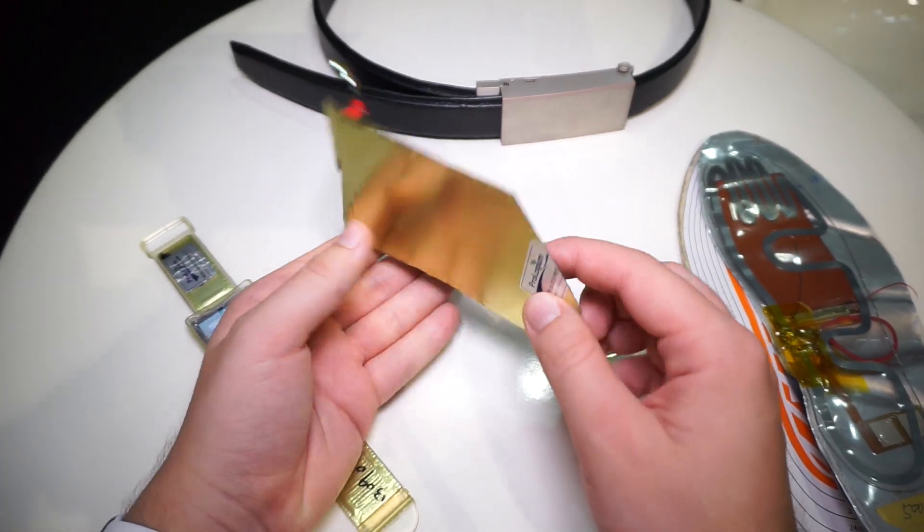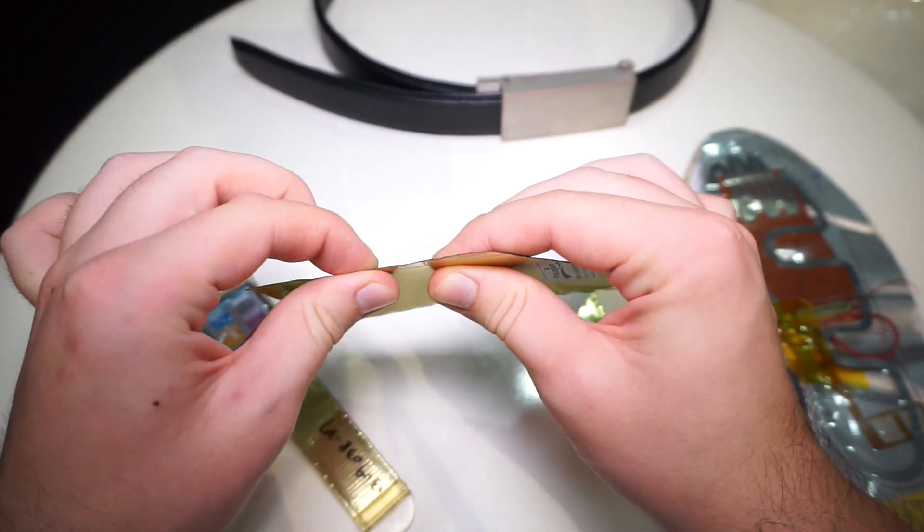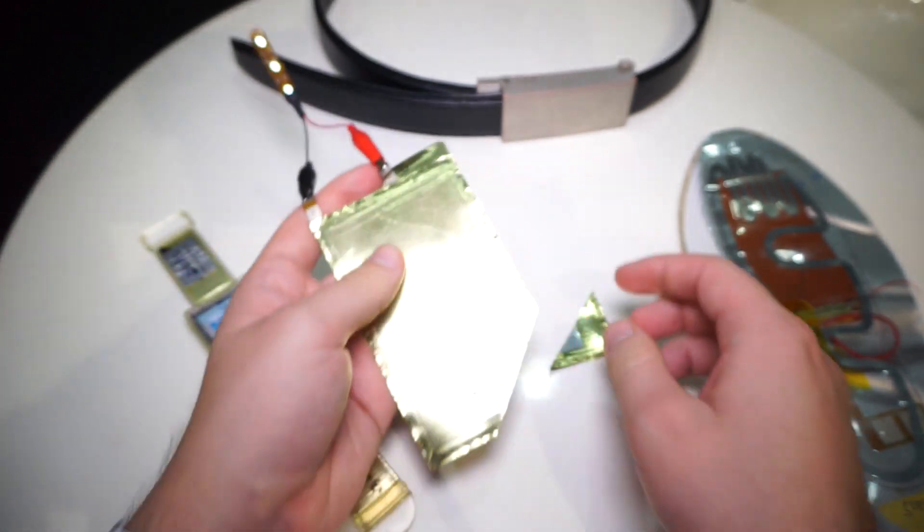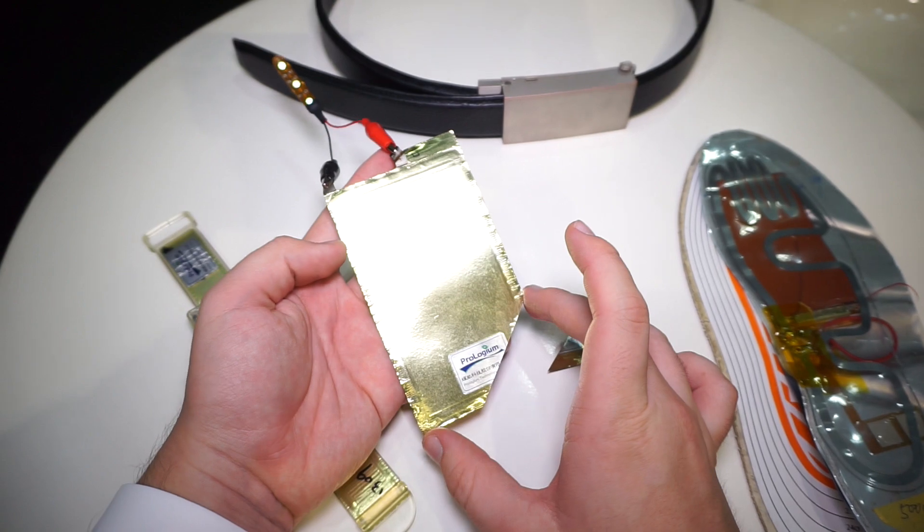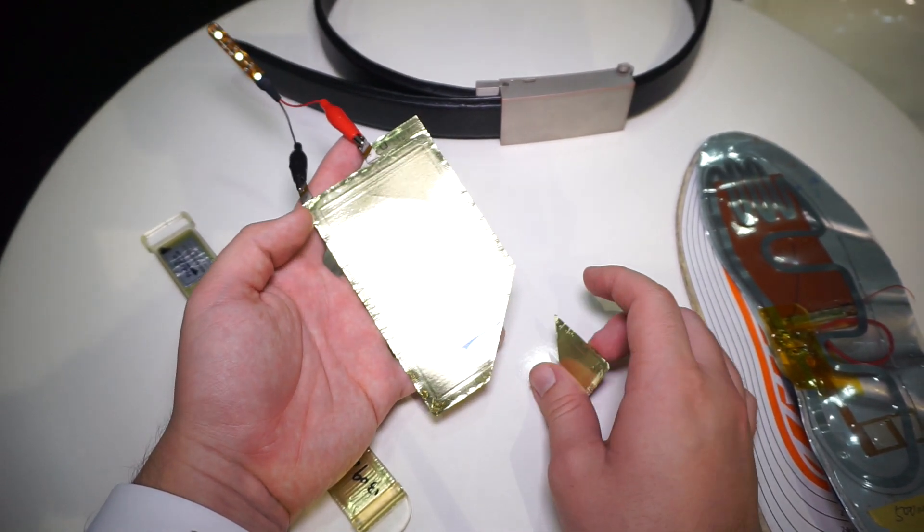Prologium is famous for their super tiny, super thin, flexible batteries. For example, this battery has a capacity of 210 mAh.